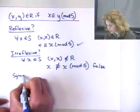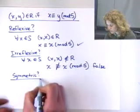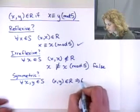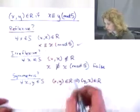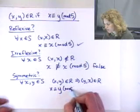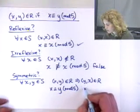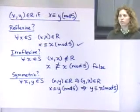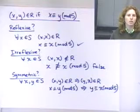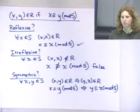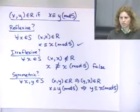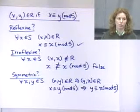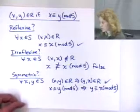Let's check symmetric. The definition was: for all x and y in S, if xy is in R, then yx is in R. Using our definition: if x is congruent to y mod 5, does that mean y is congruent to x mod 5? Yes, because it doesn't matter which order — we divide both by 5 and check if the remainder is the same. So this is symmetric.